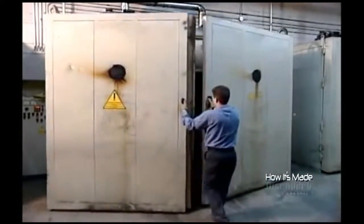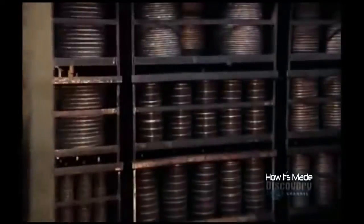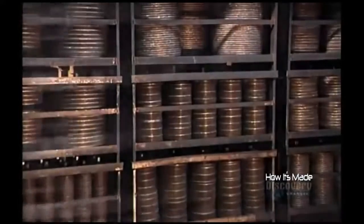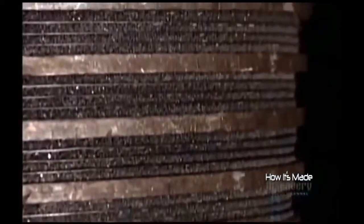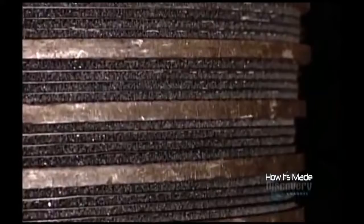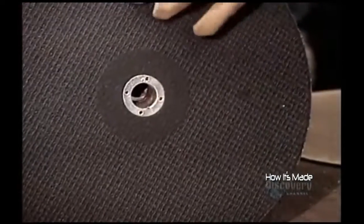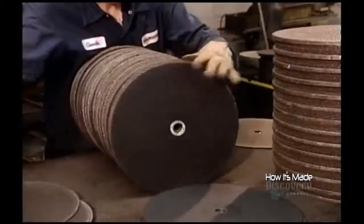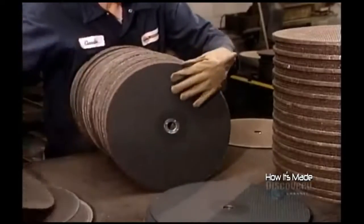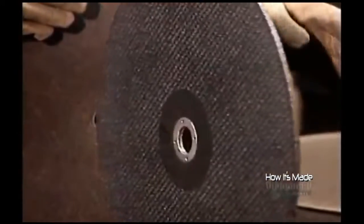Next, the wheels go into an oven, whose temperature rises gradually from 20 to 200 degrees Celsius over a period of 24 hours. This cures the resin, bonding all the ingredients together. When the grinding wheels come out, they are hard as a rock.